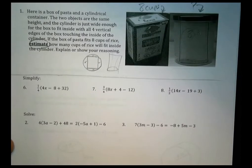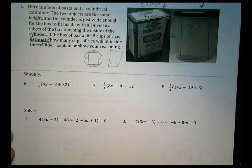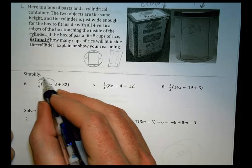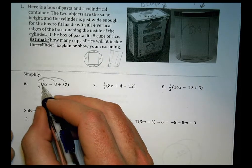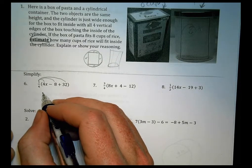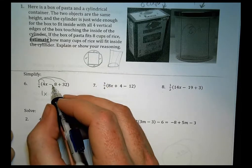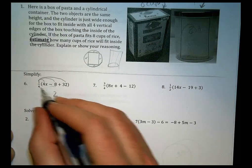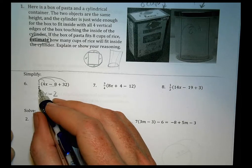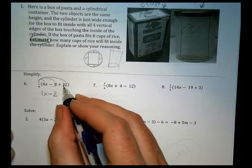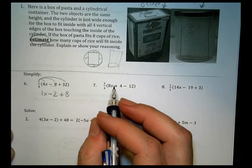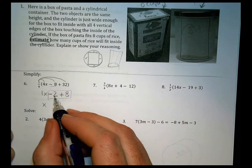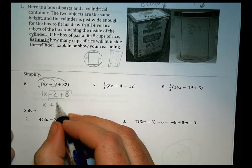Moving down here, we have some simplify questions. Let's take a look at this first one. We're going to distribute the one-fourth all the way through, or another way of thinking about it is dividing by 4. So 4 divided by 4 is 1, so we could have 1x. Negative 8 divided by 4 is negative 2, and 32 divided by 4 is 8. We can combine like terms, so we have x by itself and negative 2 and positive 8, which combine to make positive 6.